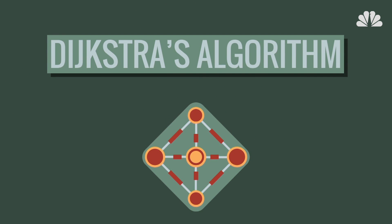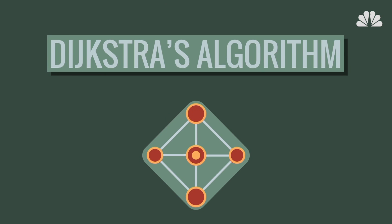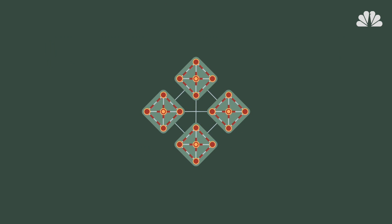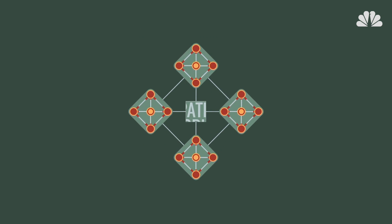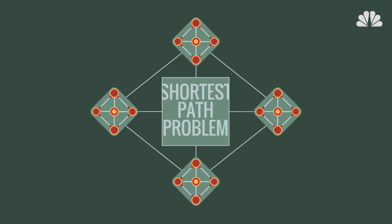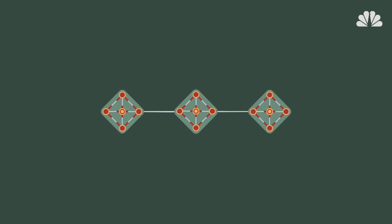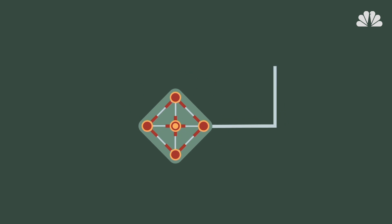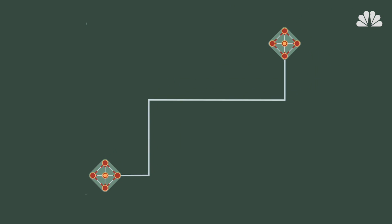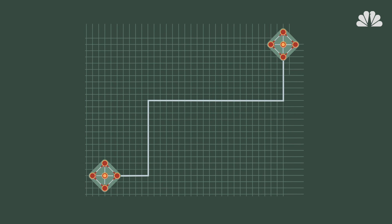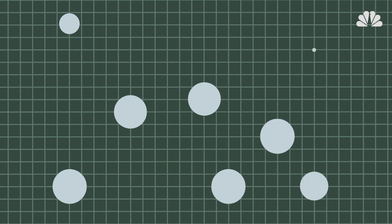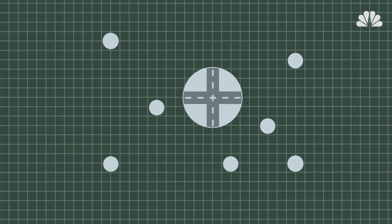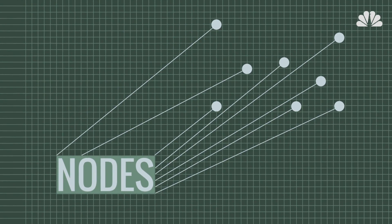It's called Dijkstra's Algorithm, and it aims to solve what's known in graph theory as a shortest path problem. Created by Dutch computer scientist Edsger Dijkstra, the algorithm calculates the shortest route from point A to point B by plotting the map as a sort of graph. Here's how it works at a basic level: different points on the map, like intersections or destinations, are called nodes.